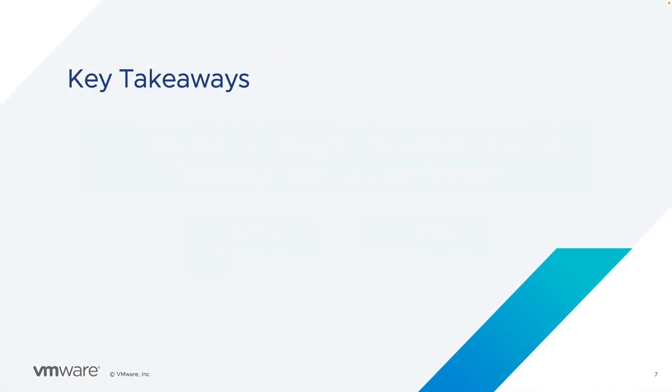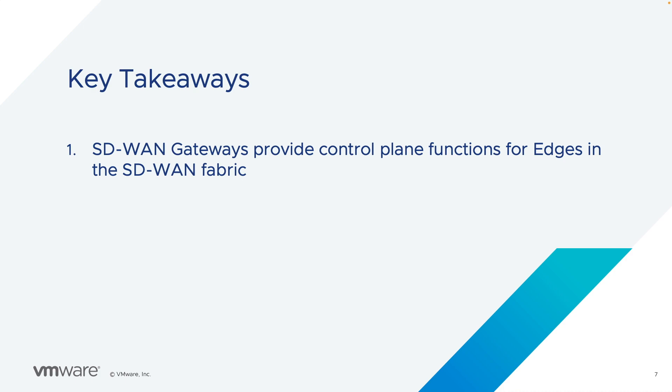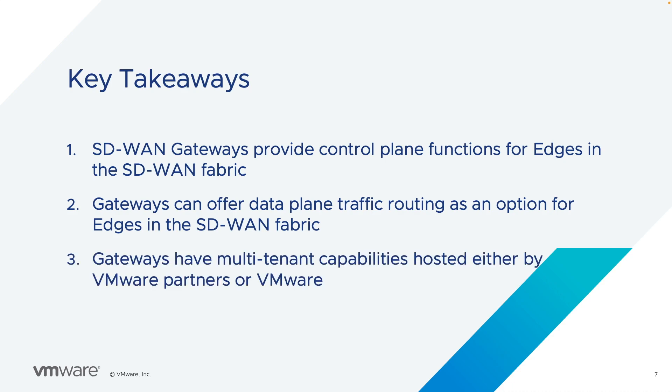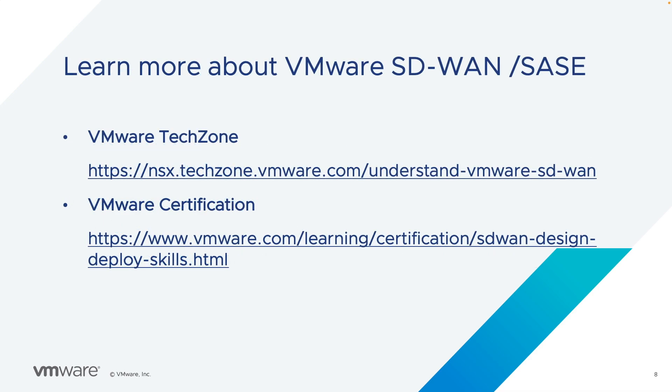The key takeaways for this video are: SD-WAN gateways provide control plane function for edges connected to the SD-WAN fabric; gateways can also offer data plane traffic routing for connected edges; and gateways have multi-tenant capabilities hosted either by VMware or its partners, providing a low-latency SD-WAN on-ramp to internet resources. Thank you for watching this video.